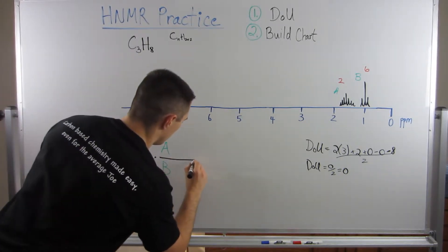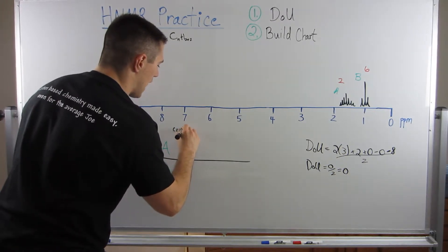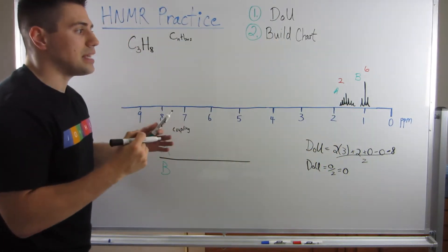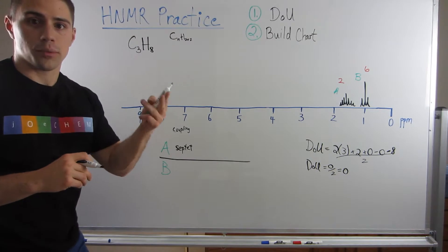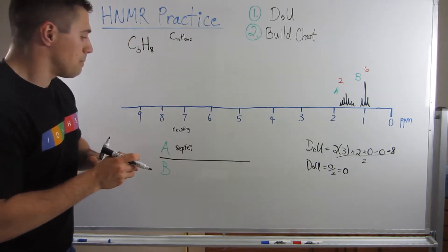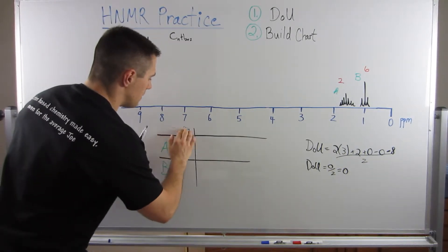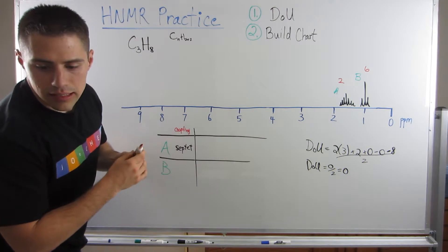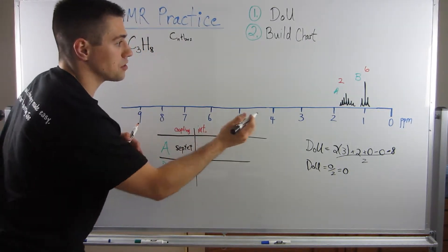Let me label the peaks: this one is peak A and this one is peak B. For my chart, I first list coupling. Peak A has seven peaks on that signal — that's a septet. Singlet, doublet, triplet, quartet, quintet, sextet, septet — seven splits means a coupling of seven. The integration for peak A is two hydrogens.